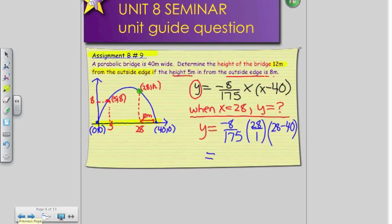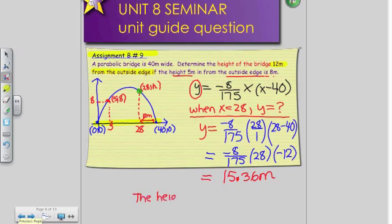Simplify that a little bit more, and we get negative 8 over 175 times 28. 28 minus 40 gives me negative 12. And now all you have to do is plug all the information into your calculator, and you get a final answer of 15.36 meters. The height of the bridge is 15.36 meters.